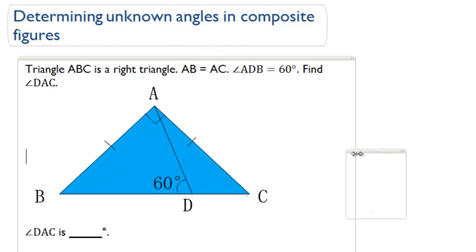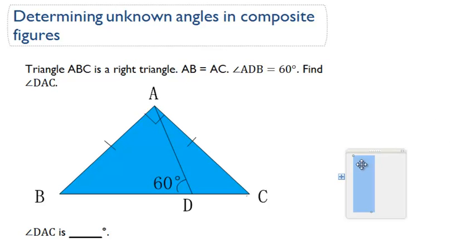Determining Unknown Angles in Composite Figures. We're given in this problem triangle ABC, so this is triangle ABC.